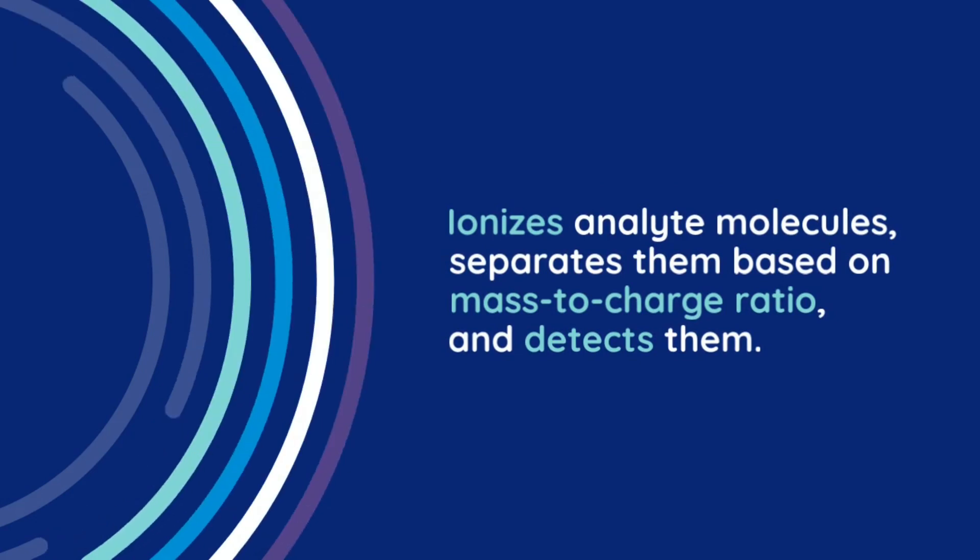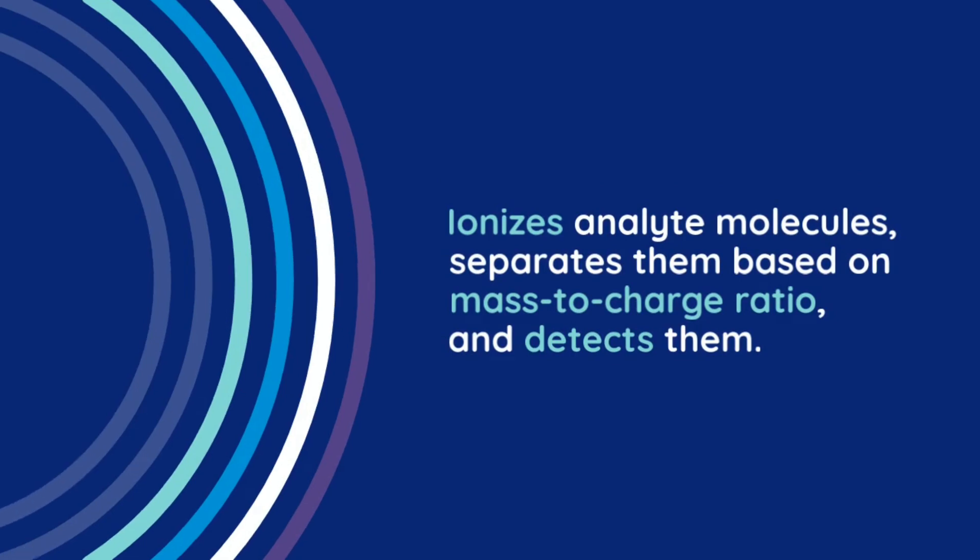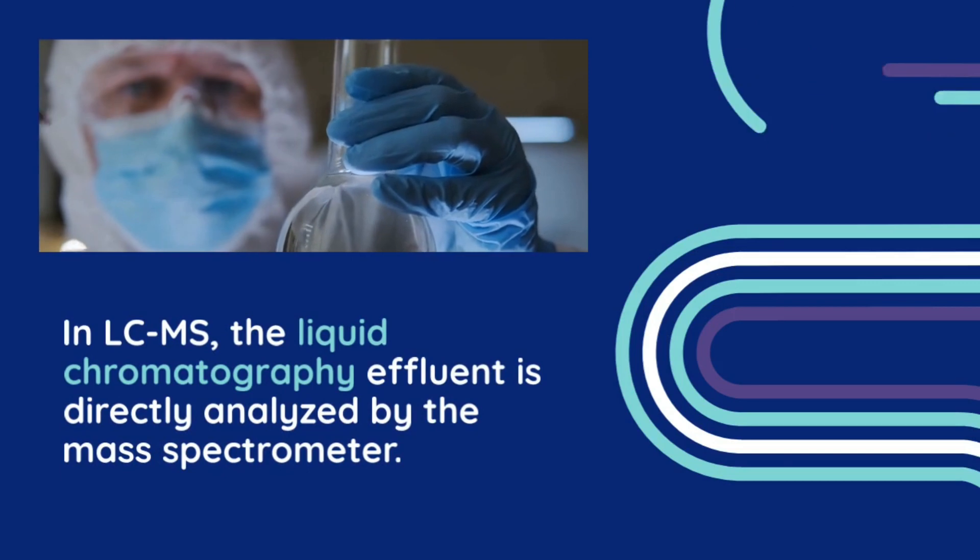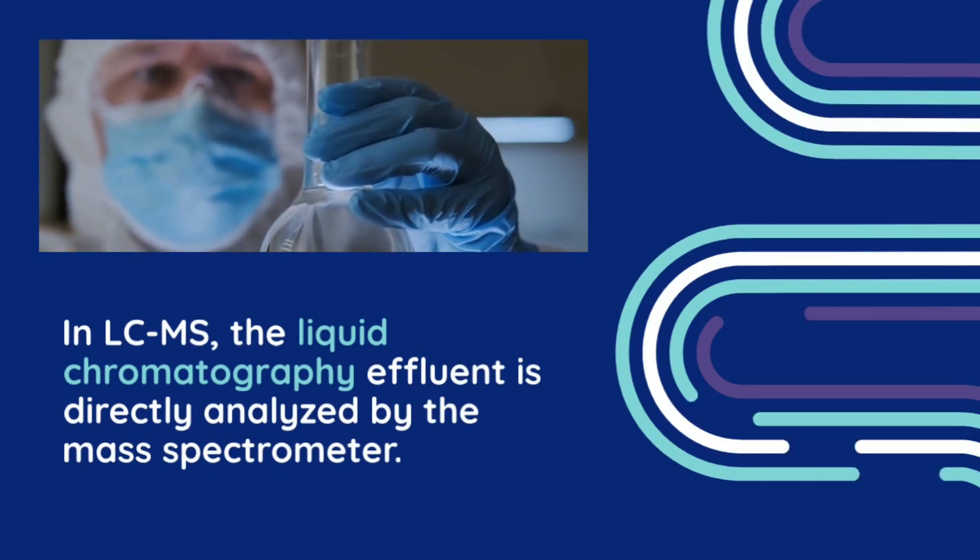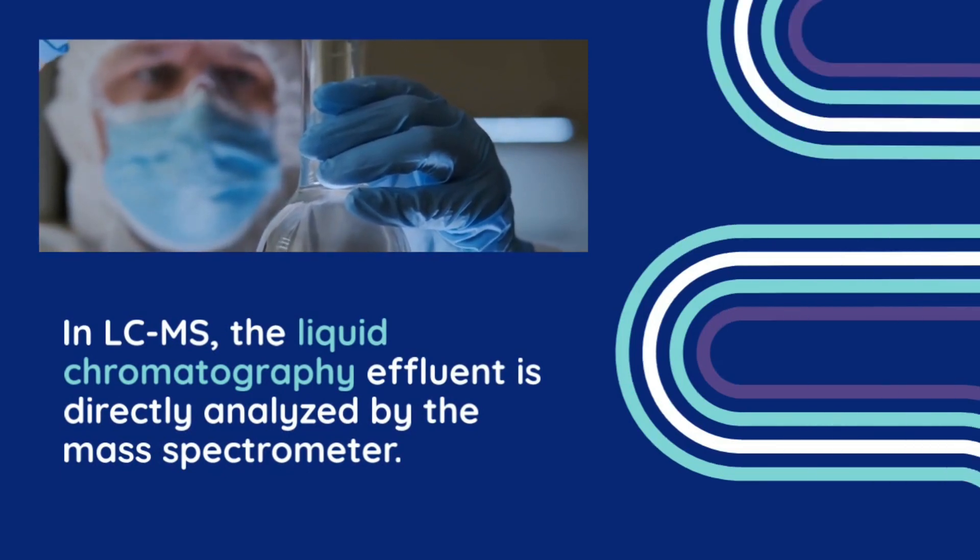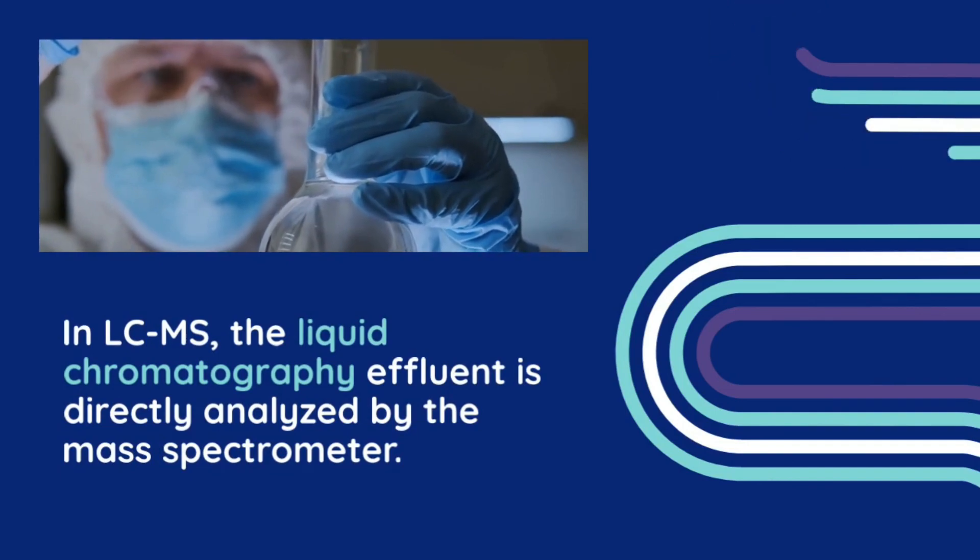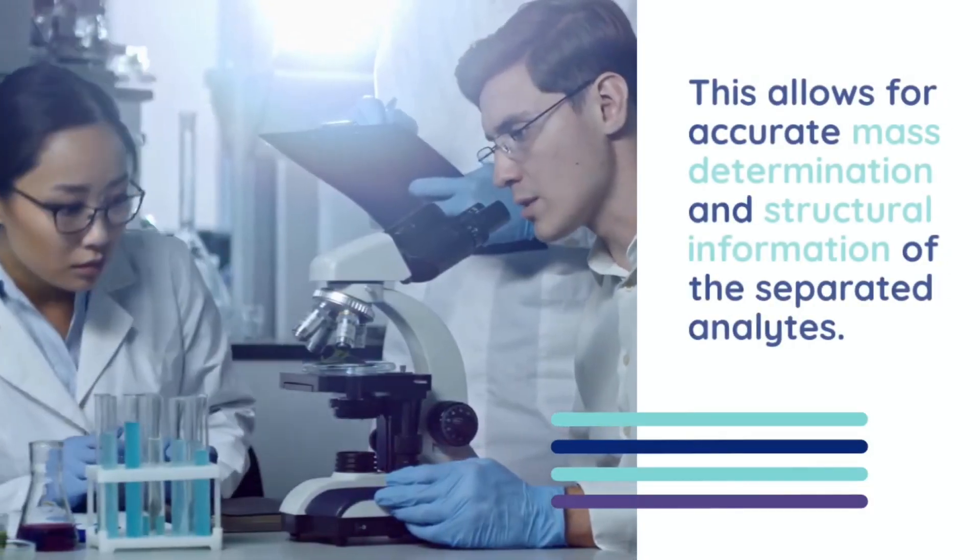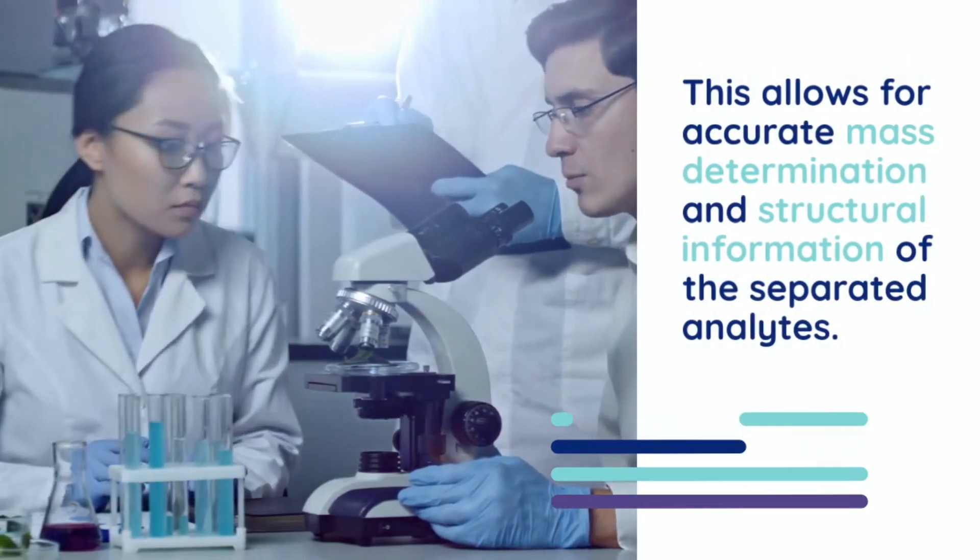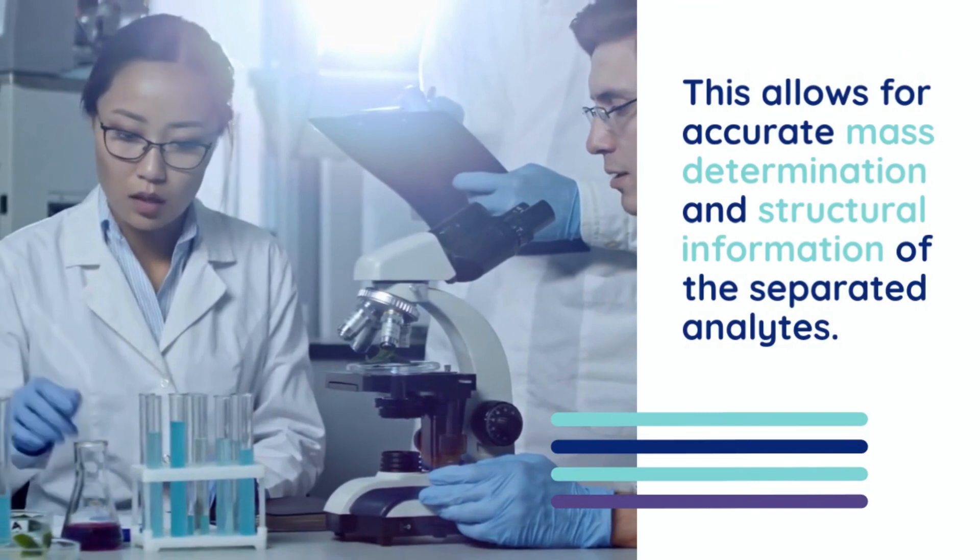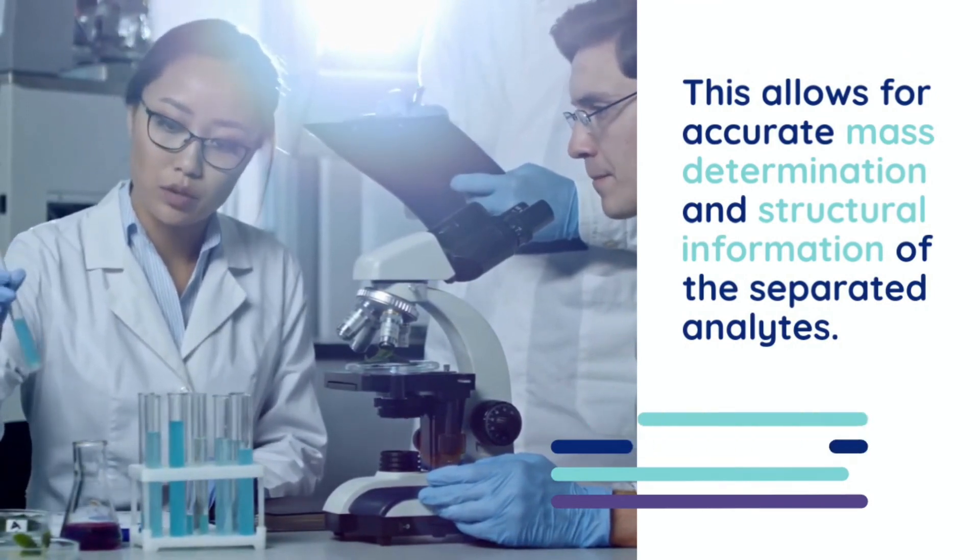In LC-MS, the effluent from the liquid chromatography column is directly introduced into the mass spectrometer for analysis. The separated analytes elute from the column and enter the ionization source where they are ionized. The ions are then introduced into the mass analyzer, which separates them based on their m/z ratio. Finally, the ions are detected and their abundance is recorded to generate a mass spectrum.